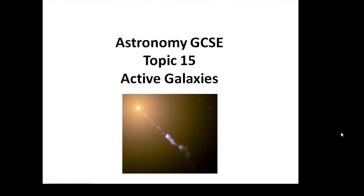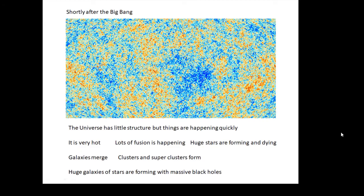Astronomy GCSE Topic 15: Active Galaxies. Shortly after the Big Bang, there was lots of hydrogen around but not much structure. The universe didn't have much structure, but things were happening very quickly. Gravity was starting to clump things together.